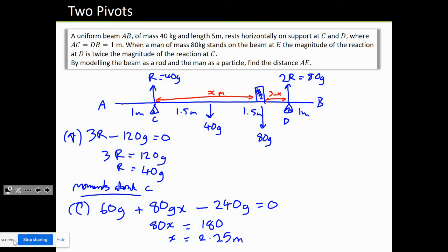If x is 2.25 meters, the distance AE equals 1 meter from A to C plus 2.25 meters from C to E, which is 3.25 meters.